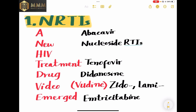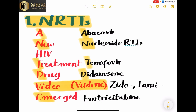Let's get started with nucleoside reverse transcriptase inhibitors. The mnemonic to remember these medications is ANTD. A is for abacavir, N is for nucleoside reverse transcriptase inhibitors, T is for tenofovir, D is for didanosine. The 'video' part sounds like '-udine,' so these drugs end in '-udine' like zidovudine and lamivudine. EM is for emtricitabine.